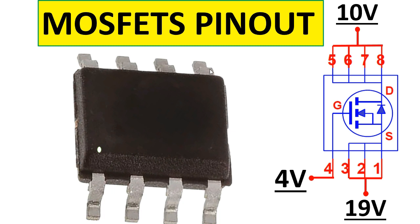The other four pins are the drain. As you can see in the circle diagram, the dot is here at pin number one. Pins one, two, and three — three pins connected together — are the source. Pin number four is the gate, and the four remaining pins connected together are the drain.